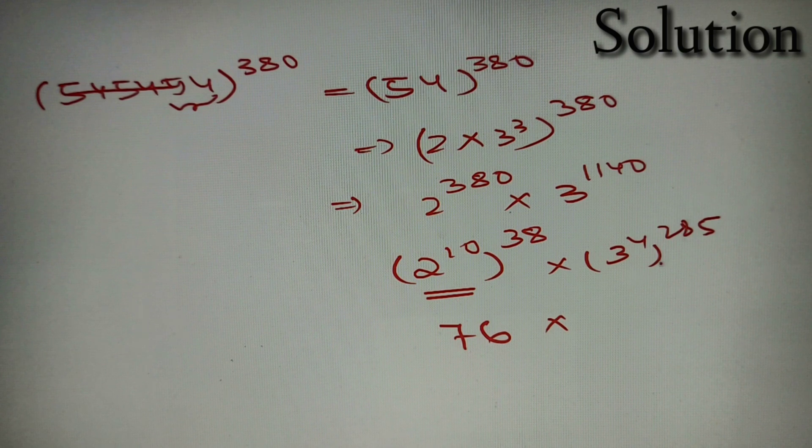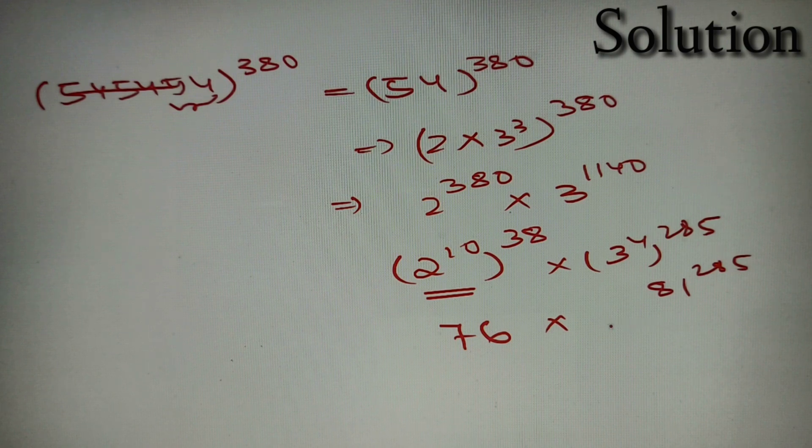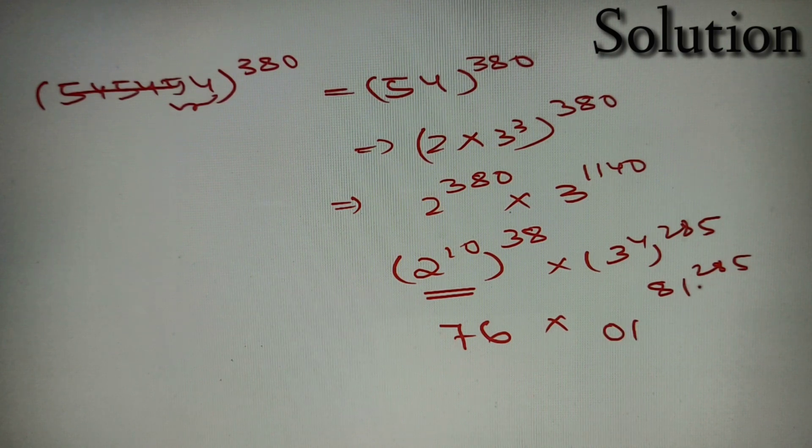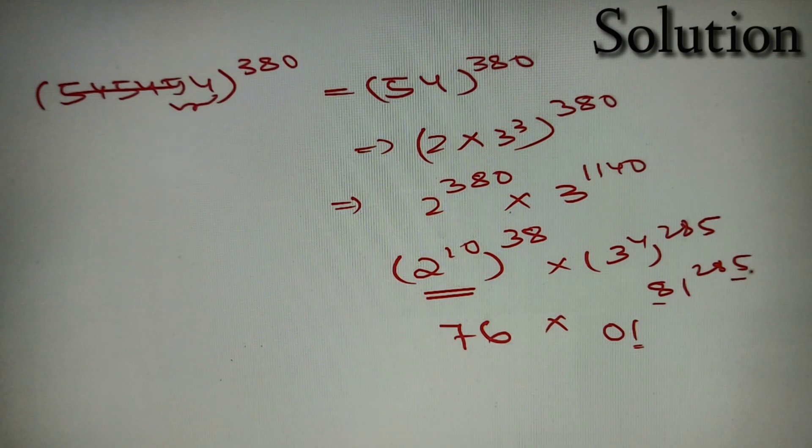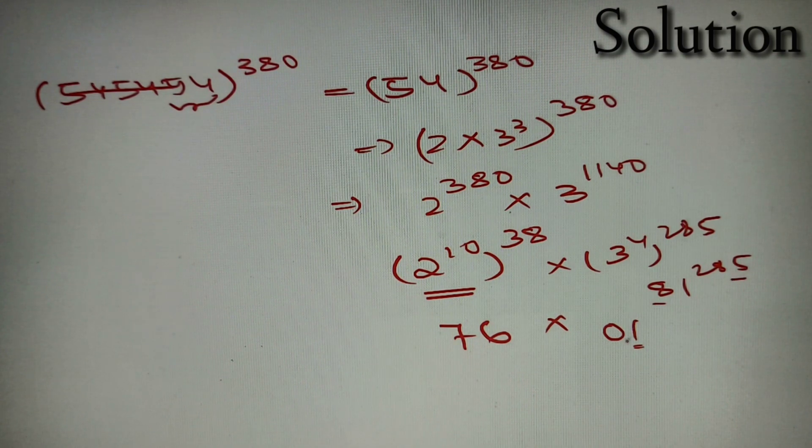Now 3 raised to power 4 is equal to 81. Now 81 raised to the power 285 will end in 01. This is because we have to follow the rule for numbers ending in 1. So the last digit will be 1 and the second last digit will be 8 into 5, that is equal to 40, and we will take the 0.